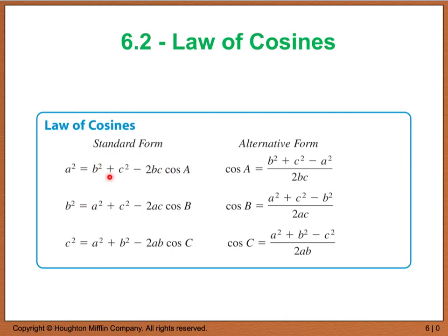Likewise, if we're trying to find an angle, I would suggest just memorizing the one equation and deriving the rest. If I want to solve for angle A, I take my side lengths, divide by 2bc, and that gives me cosine of A. Then, in order to solve for angle A itself, we take the inverse cosine. We will be doing examples that deal with this.